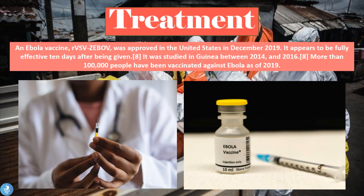Finally, let's talk about the Ebola vaccine. As part of the prevention strategy, we do have an Ebola vaccine called rVSV-ZEBOV, which was approved in the United States in December 2019. It appears to be fully effective within 10 days after being given. It was studied in Guinea between 2014 and 2016, and since then more than 100,000 people have been vaccinated as of 2019. If one is traveling to an area known for Ebola outbreaks, it is definitely a good idea to get vaccinated before traveling, as the vaccine proves quite successful in preventing the development of the disease.